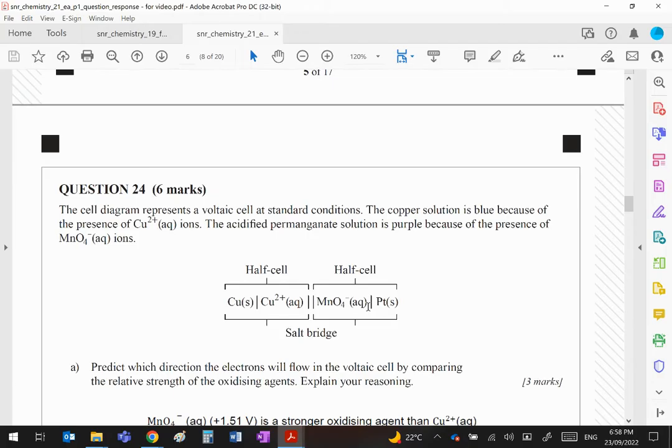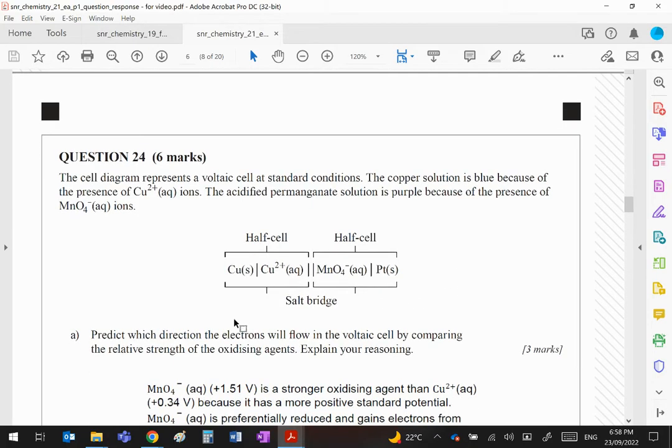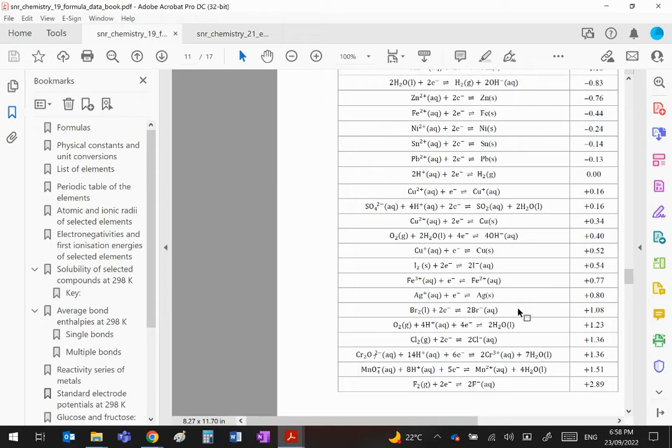Okay, now predict the direction of the electron flow in the voltaic cell. If you are combining two half cells, the easiest way of predicting which way they will go: remember one has to be an oxidation and one has to be a reduction. Since these are all written as reductions, you're going to have to reverse one of them.